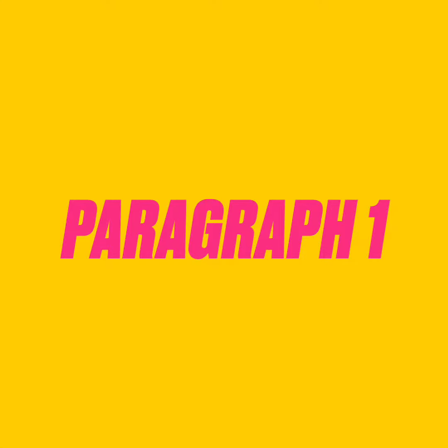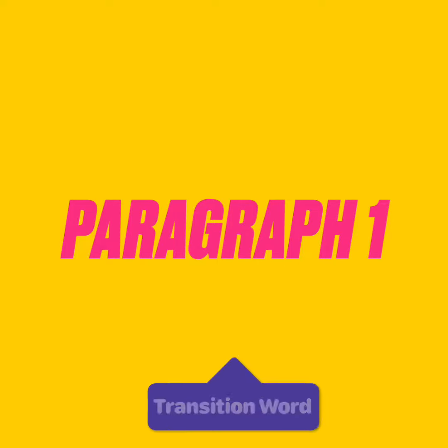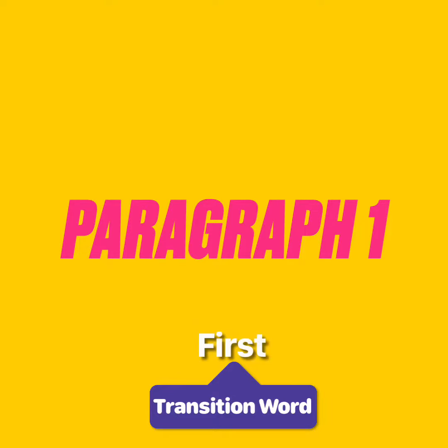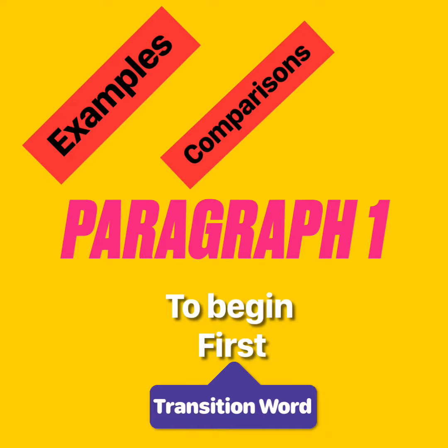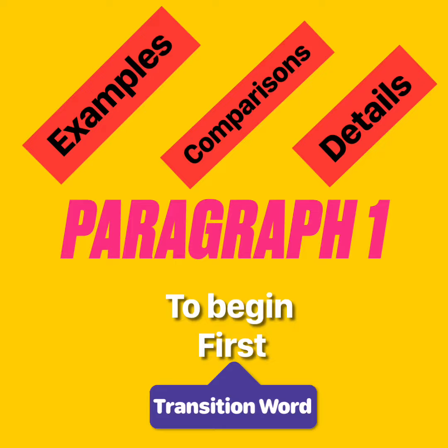Paragraph one explains the first reason why your opinion is correct. Always start your paragraph with a transition word. Then, you want to use examples, comparisons, and details to explain why your opinion is correct.